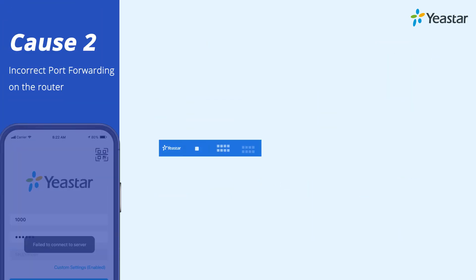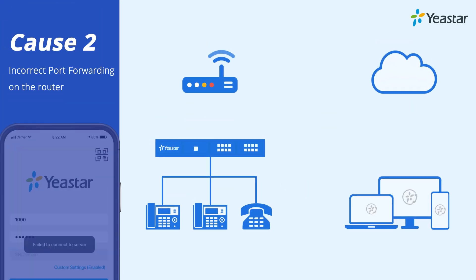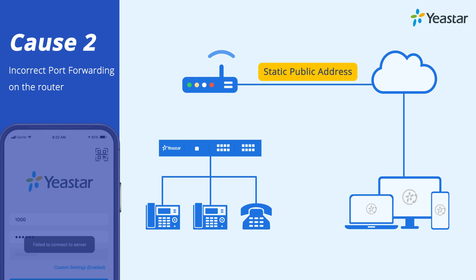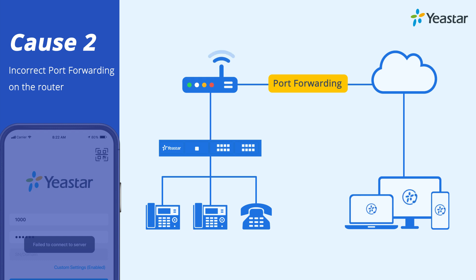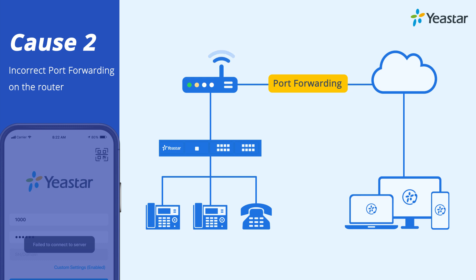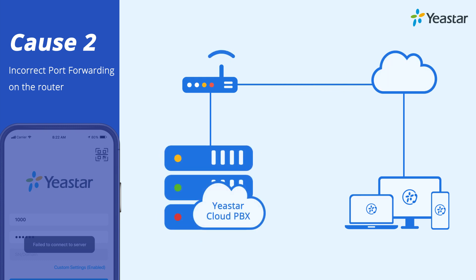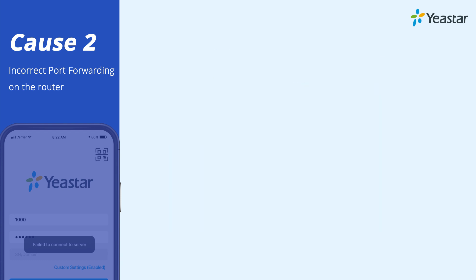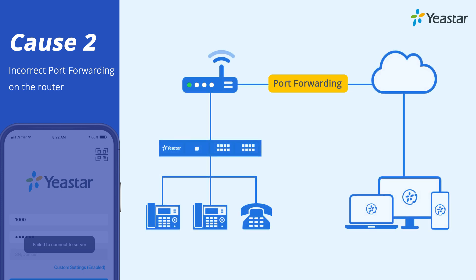Next, we need to check port forwarding. When you are using a PBX, you need to deploy a static public IP address and set port forwarding on the router to allow Linkus clients to access the PBX remotely. If your port forwarding is not right, you will have a 'failed to connect to server' problem. Of course, if your PBX is using Linkus cloud service, or your PBX is a Yeastar or Cloud PBX, you won't have the port forwarding issue and can skip this part.